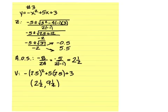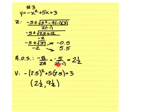Alright, number 3. The zeros are negative 0.5 and 5.5. The axis of symmetry is 2 and a half, and then the vertex is 2 and a half and then 9 and a fourth.